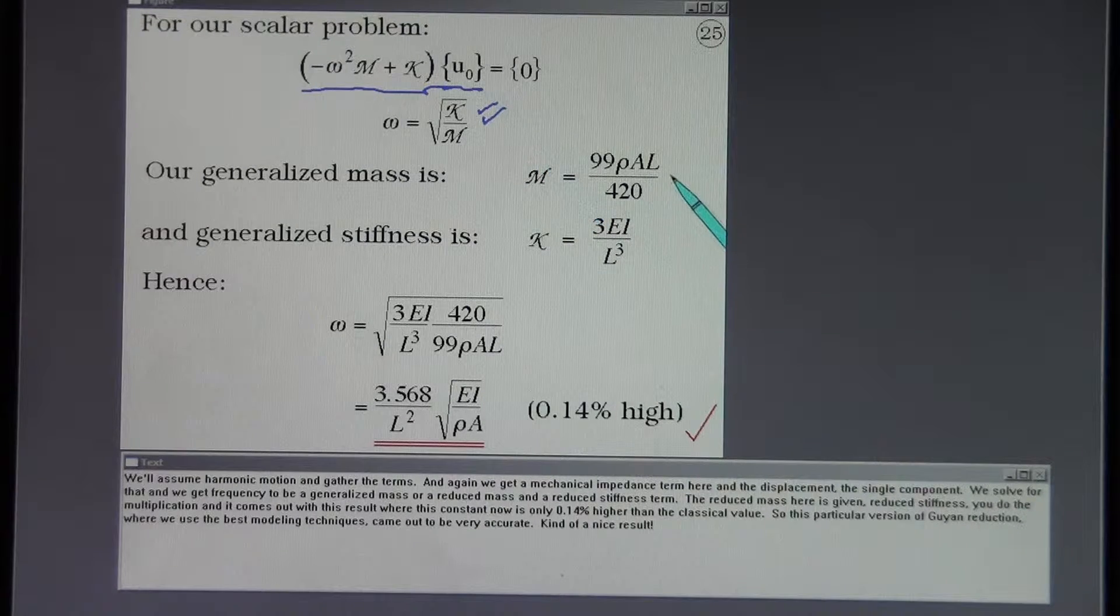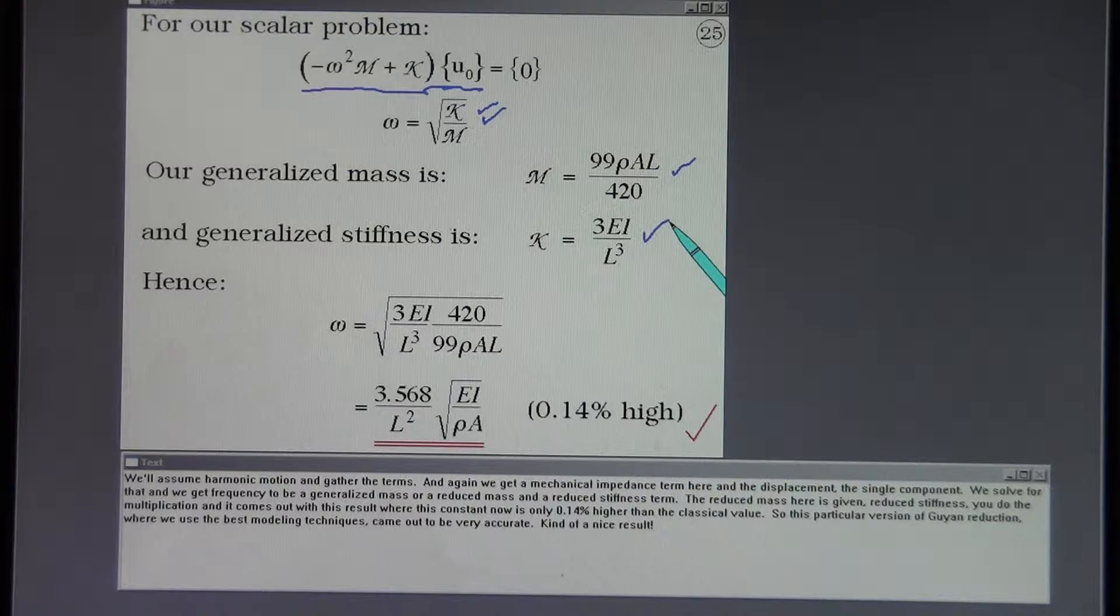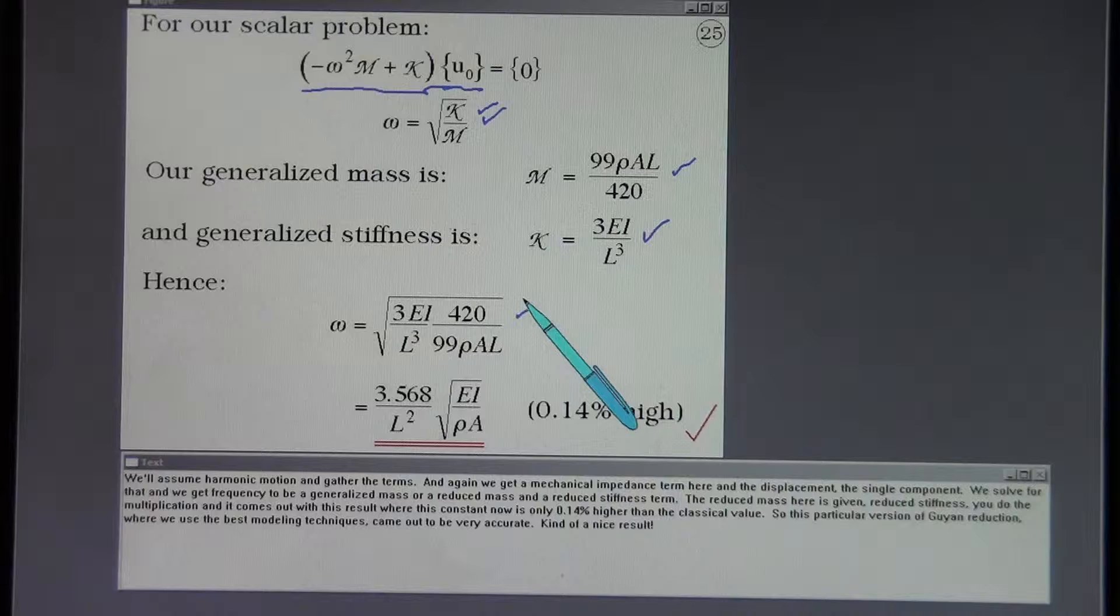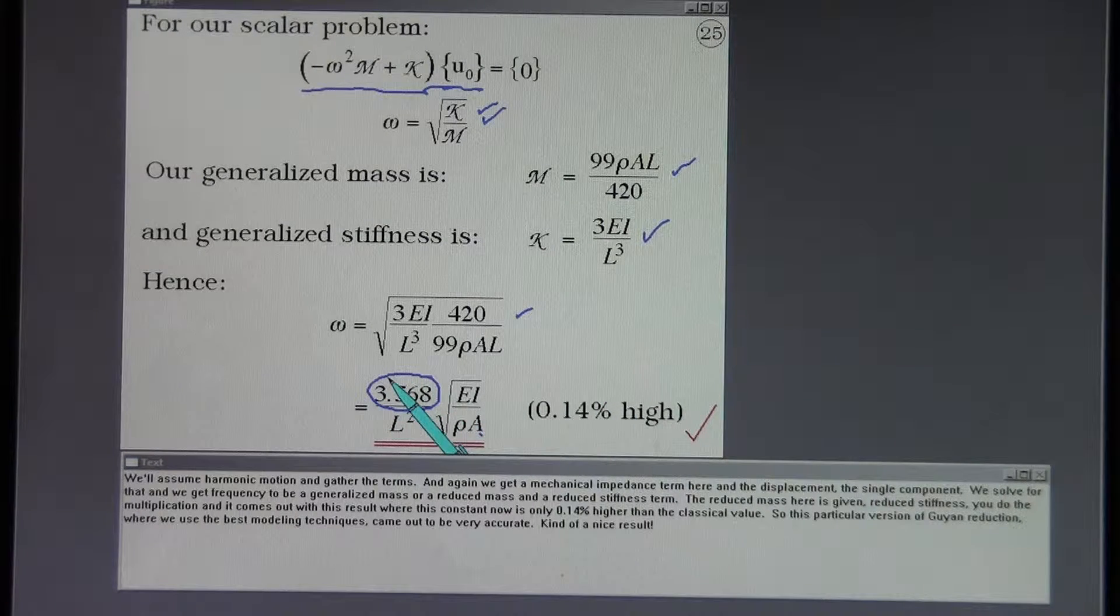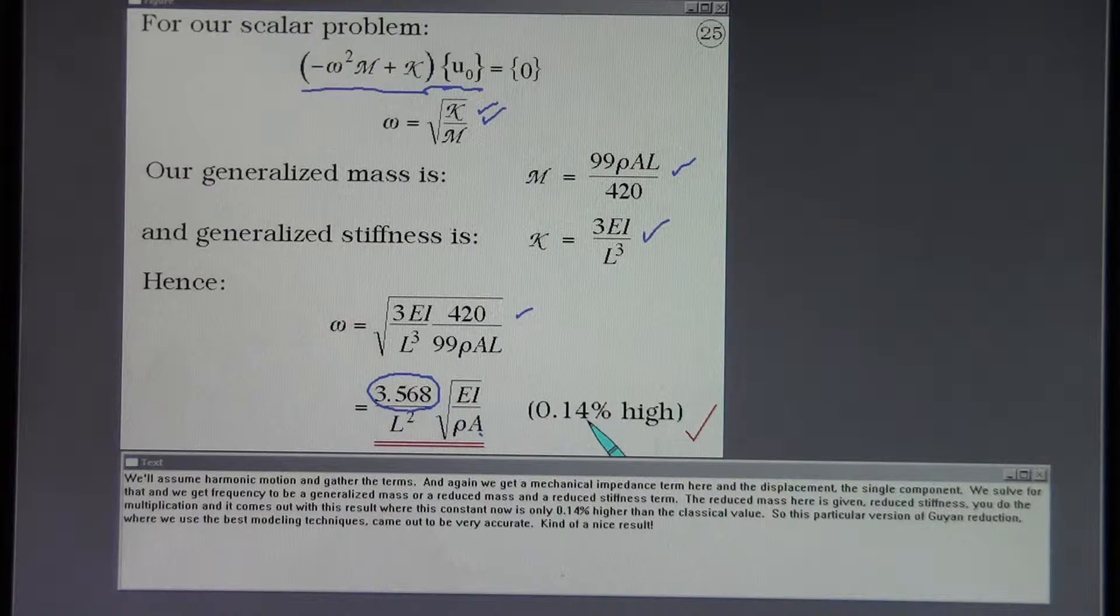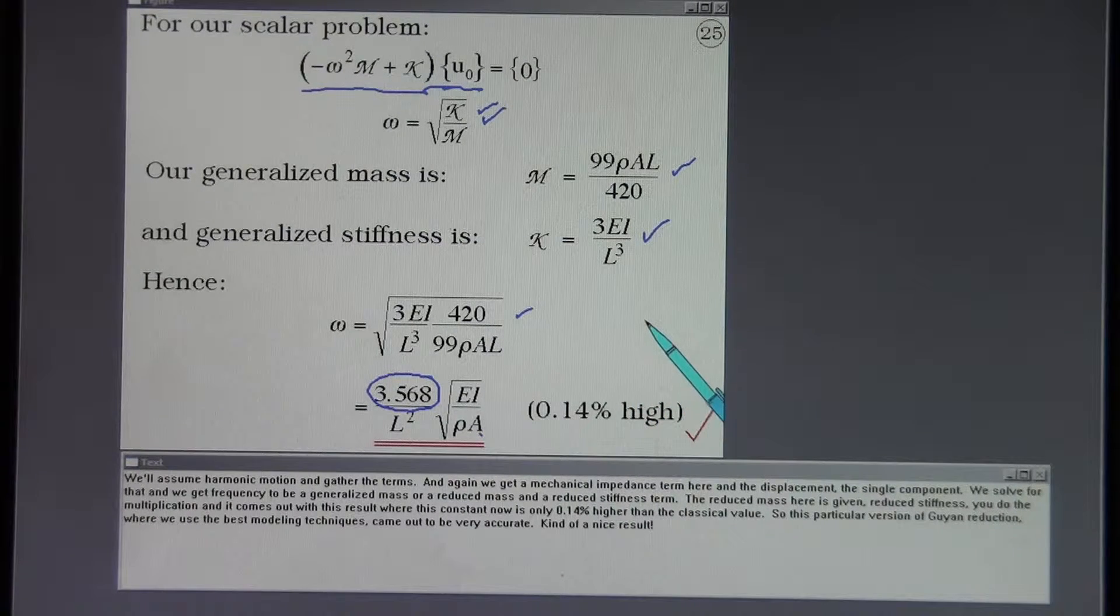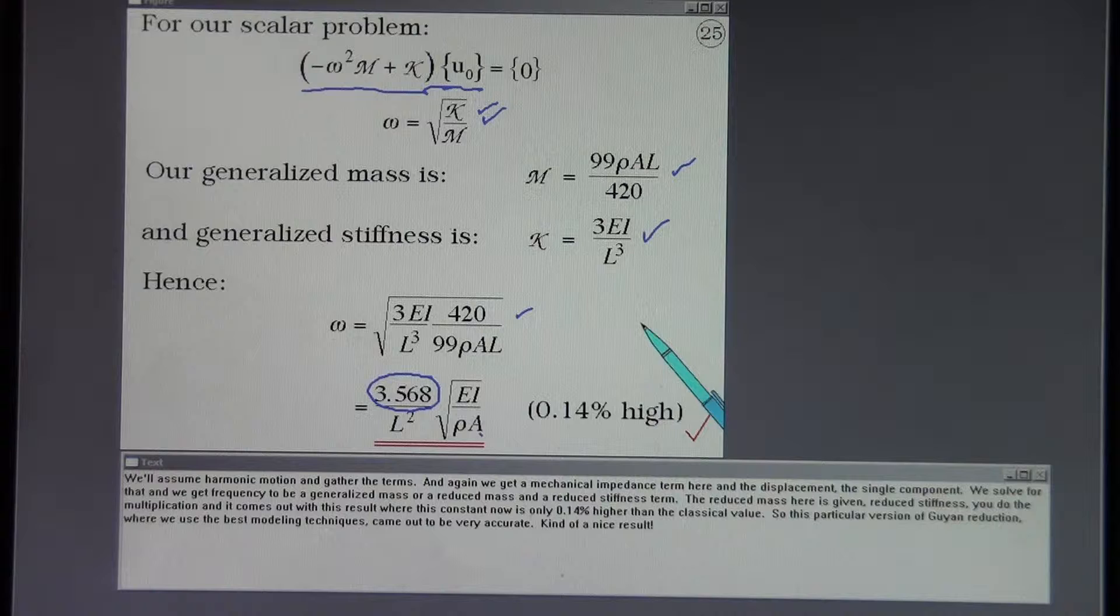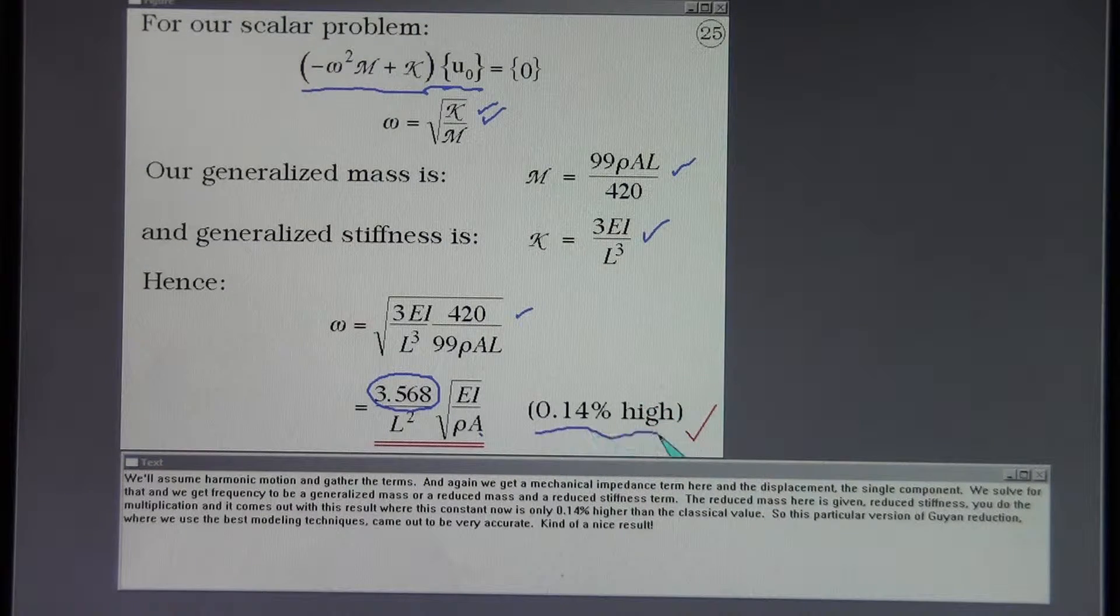The reduced mass here is given. The reduced stiffness. You do the multiplications and it comes out with this result where this constant now is only 0.14% higher than the classical value. So this particular version of Guyan reduction where we use the best modeling techniques came out to be very accurate. Kind of a nice result.